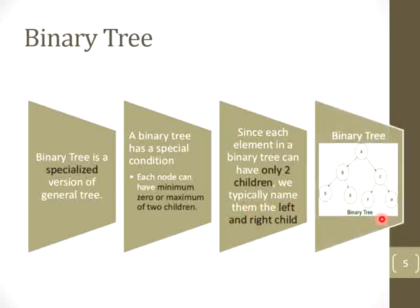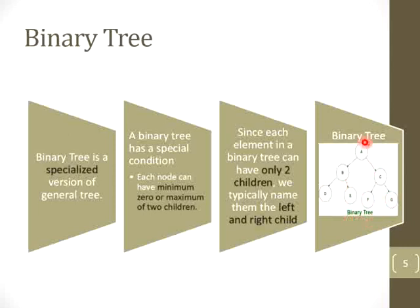This is an example of a binary tree. Here you can see the root node A. B is the left child and C is the right child of root node A. In the same way, D is the left child of B, E is the right child of parent node B, F is the left child of parent node C, and G is the right child of parent node C. So every internal node has a maximum of 2 child nodes — that's why this is a binary tree.